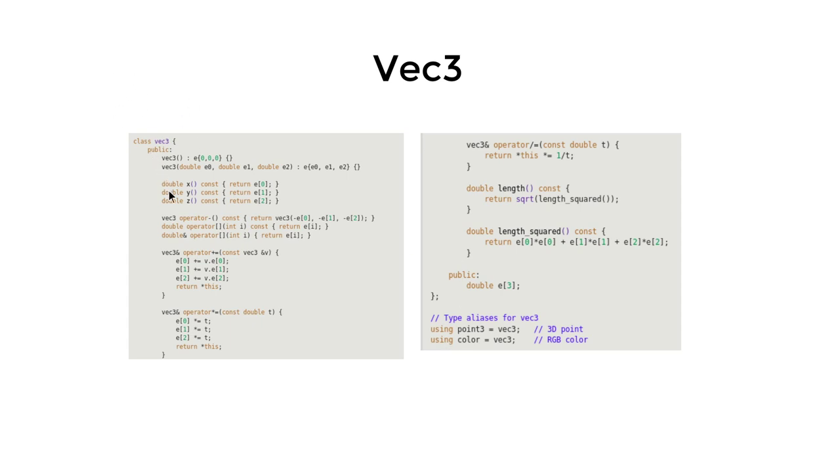This class defines a bunch of algebraic operations we assume to have for vectors. Notice here we define two type aliases for vector3, which are point and color.